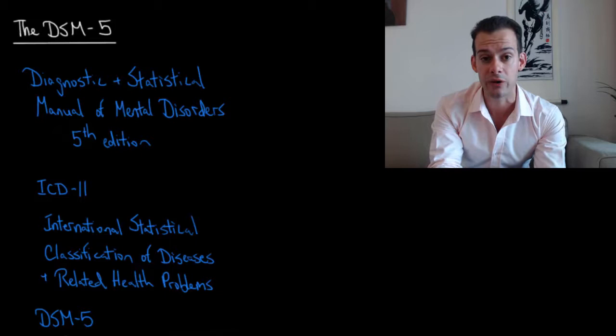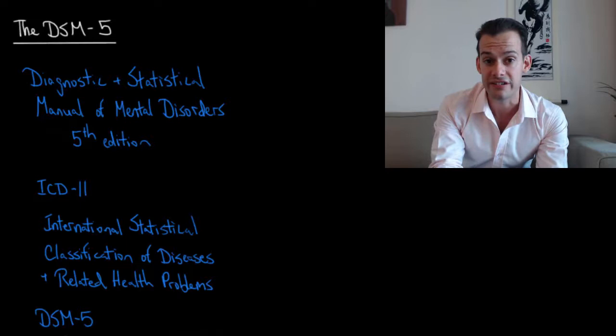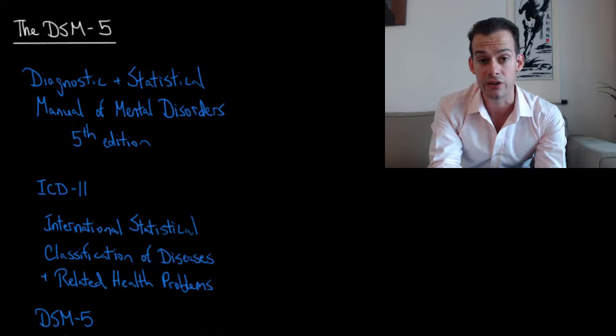Now the DSM is the most commonly used manual for diagnosing mental illness in the United States, but it's not the only manual in use and in Europe it's more common for psychiatrists to use the ICD. This is the International Statistical Classification of Diseases and Related Health Problems and this is in its 11th edition, released just a few months ago in 2018.